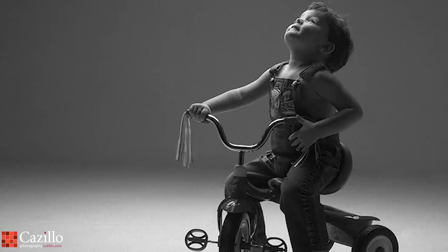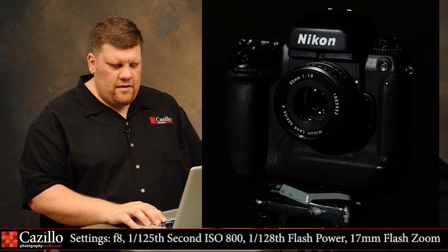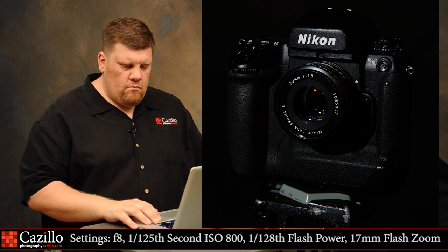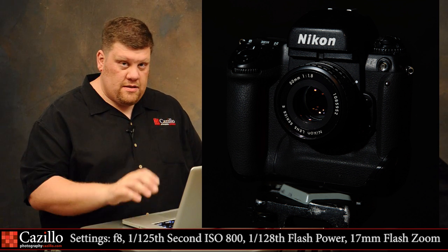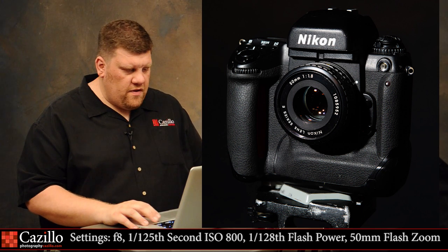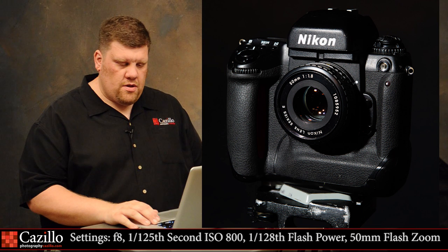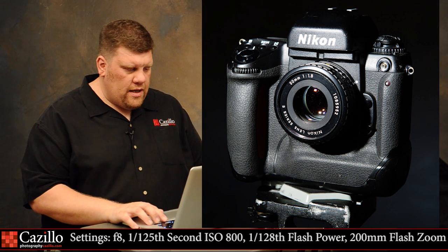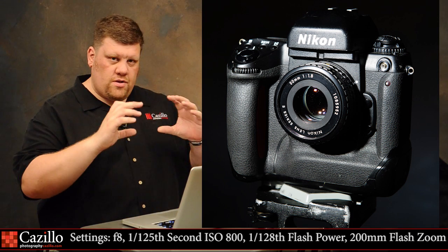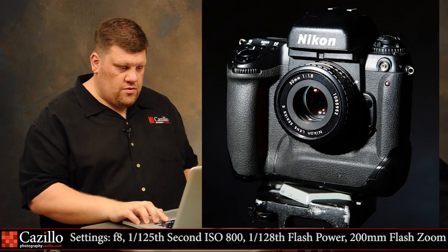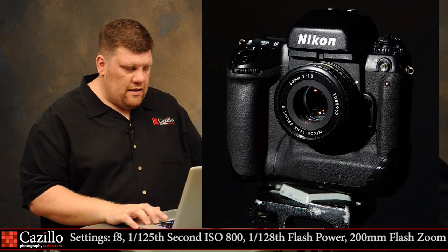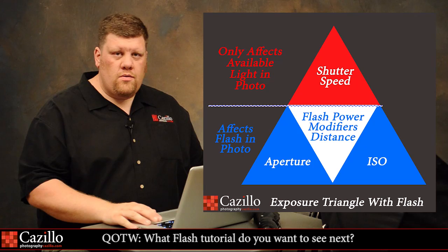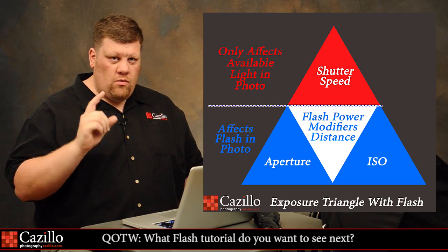I reset to 1/128th power, ISO 800 at f/8, and now I'm changing the zoom head position — another type of modifier. At 17mm the pattern is wide, then at 50mm it narrows, and at 120mm and 200mm you can really see how much the light pattern is tightening down. Flipping between 120 and 200 makes the difference very clear — the pattern of light getting smaller is pretty cool.